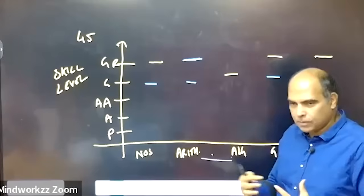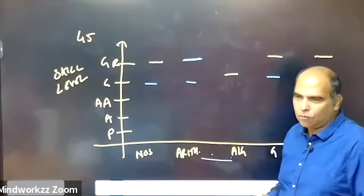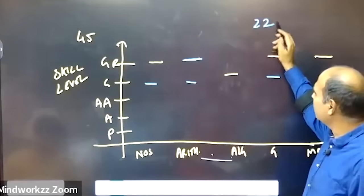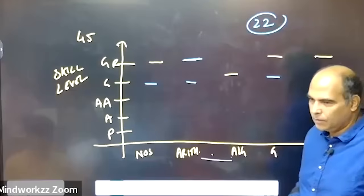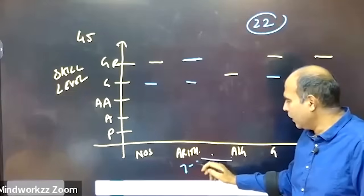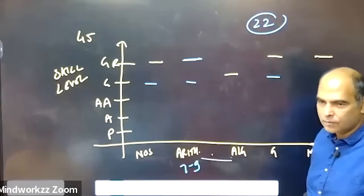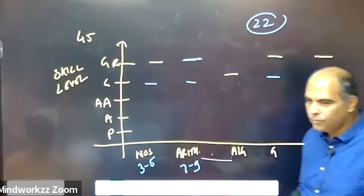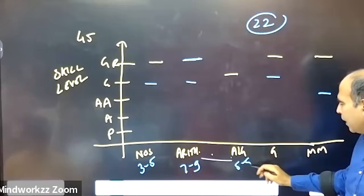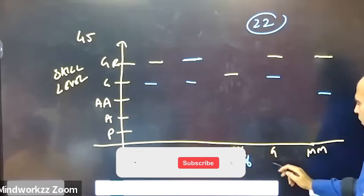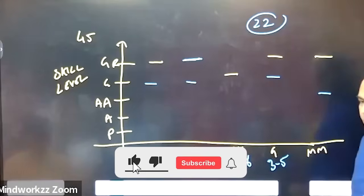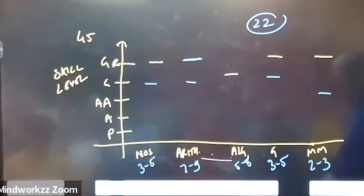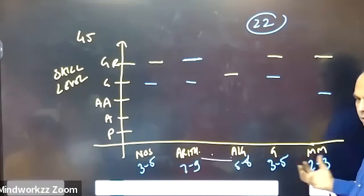If you look at the syllabus distribution, of the 22 questions currently in the exam, around seven to nine come from arithmetic, three to five from numbers, five to eight from algebra, three to five from geometry, and two to three from modern maths. This is the structure.